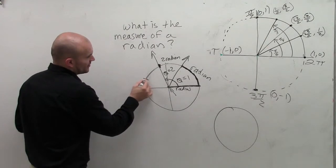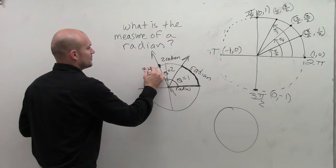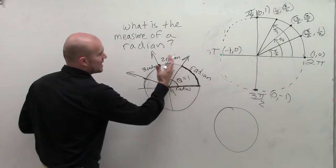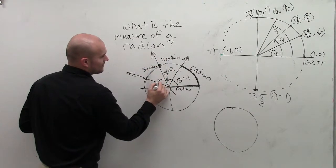Then it gets nice and tricky. When we get to here, that's going to be three radians. So if my angle went all the way, if I rotated my arrow all the way to here, I would have three radians.